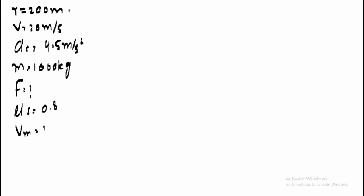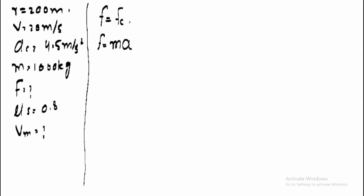For Part A, we have to calculate the force of friction. The force of friction is equal to the centripetal force. The centripetal force is equal to mass multiplied by centripetal acceleration — that is 1000 multiplied by 4.5 — which gives us 4500 Newtons. So the force of friction is equal to 4500 Newtons.